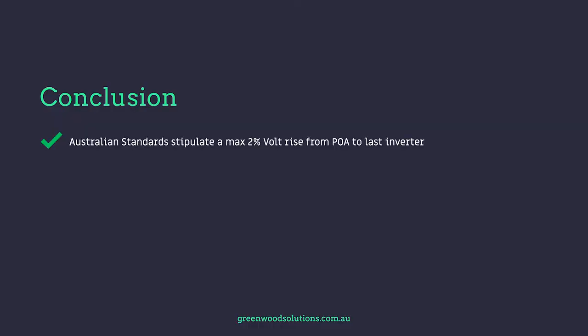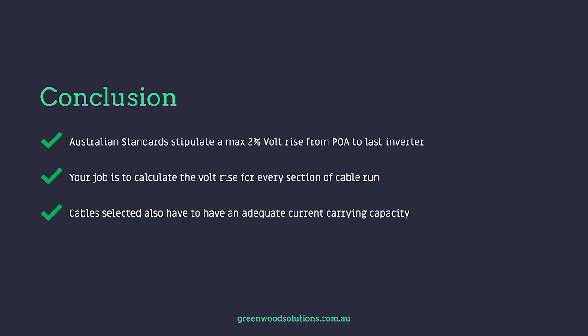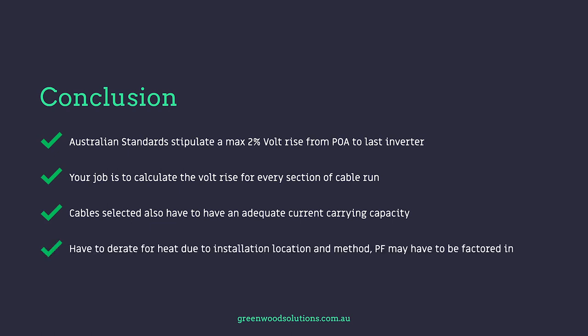Conclusion: Australian standards stipulate a maximum 2% volt rise from point of attachment or point of supply to last inverter. Your job is to calculate the volt rise for every section of cable. Cables selected also have to have adequate current carrying capacity, must be derated for heat due to installation location and method, and power factor may have to be factored in.